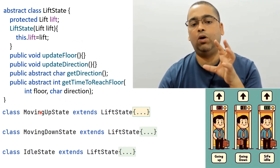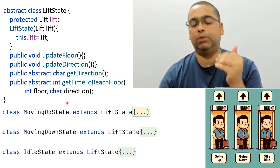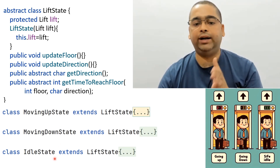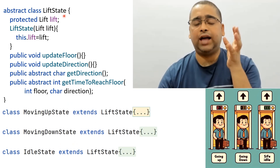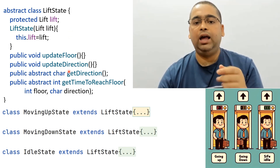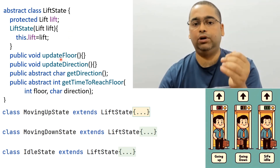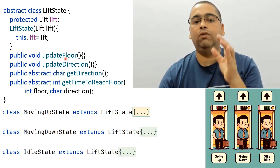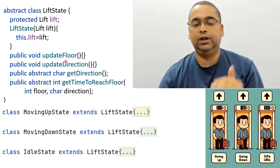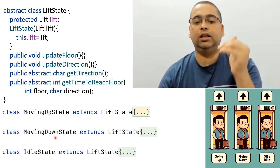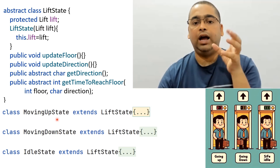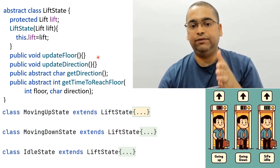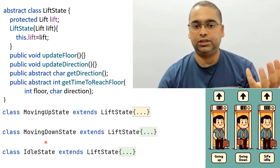The second part will be all the state classes which implement those common features. For example, in the case of lift, we have MovingUpState, MovingDownState, and IdleState. I could have just had a single class with these methods and used if-else statements for update floor. Suppose a lift is moving in the up direction and is on floor 4 — update floor called the next second will update it from floor 4 to floor 5. If the lift was moving down, the floor would go from 4 to 3. If it was in idle state, it would remain at floor 4.